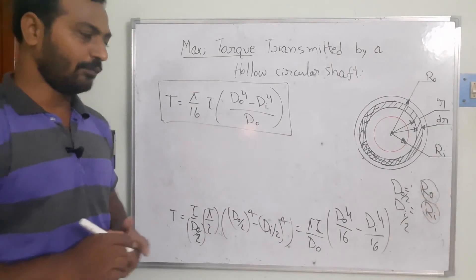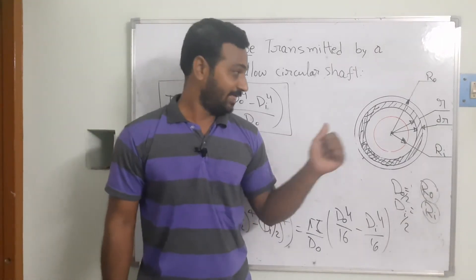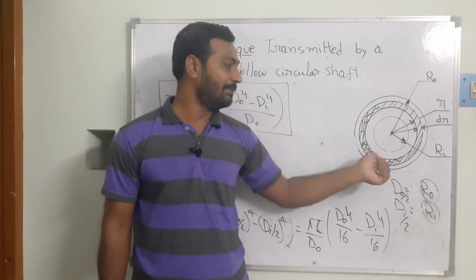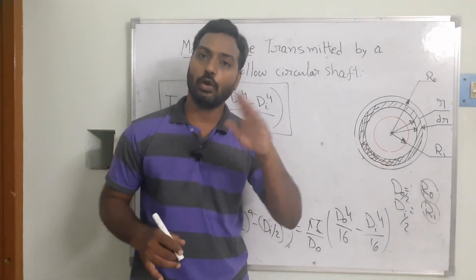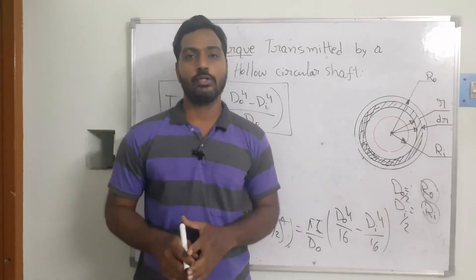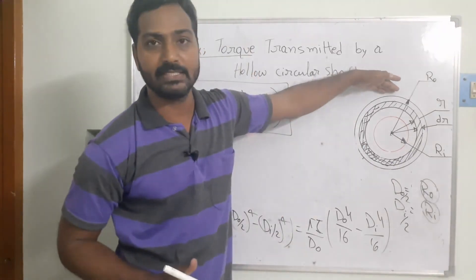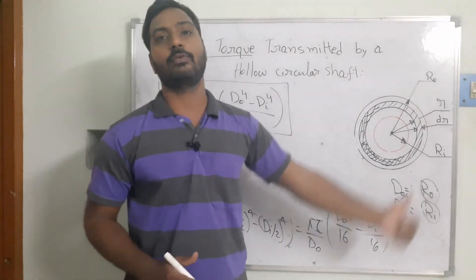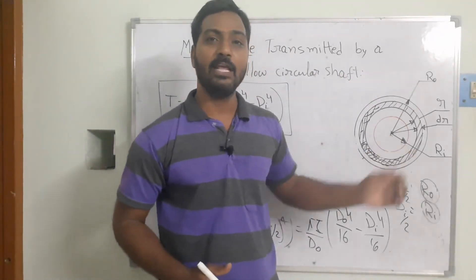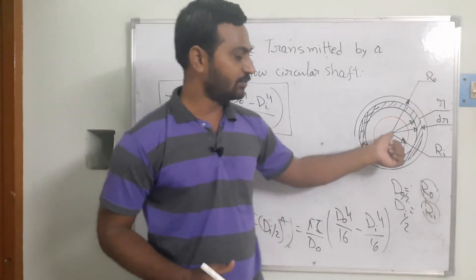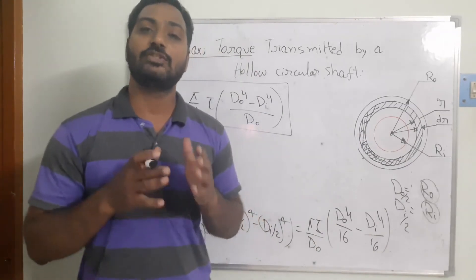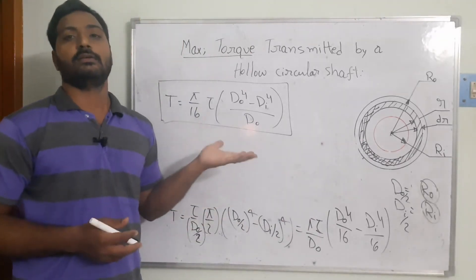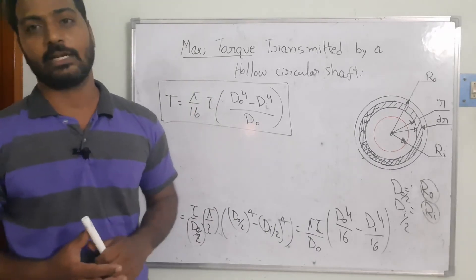To summarize: we took the hollow circular shaft, considered one elemental strip, calculated the torque on that elemental strip, and integrated to get the total torque transmitted by the hollow circular shaft. The outer surface at R_naught carries the maximum shear stress and therefore the maximum torque. At the inner surface and toward the center, shear stress is zero, meaning zero torque and zero shear strains exist at the center. I hope you understand the mathematical model for maximum torque transmitted by a hollow circular shaft.